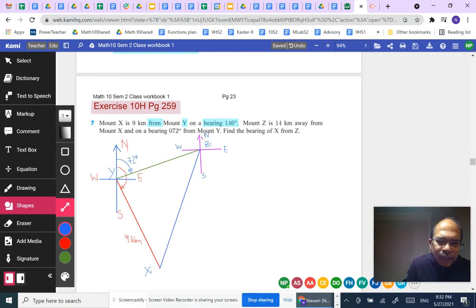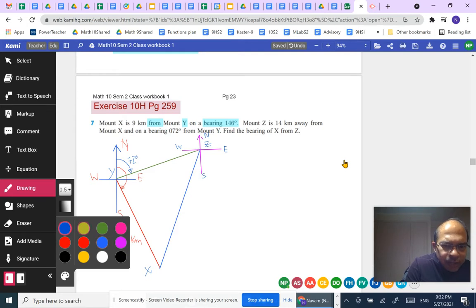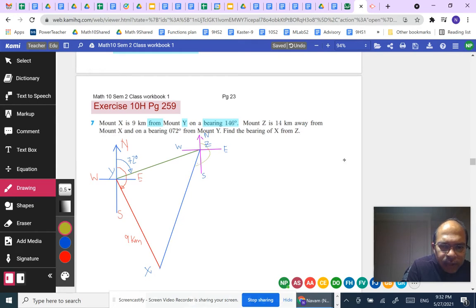So we have a triangle X, Y, Z. The question being asked is to find the bearing of X from Z, which is really this angle that you see me drawing here. That is the bearing that's required.